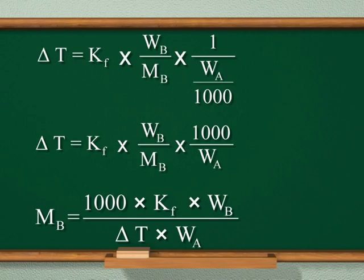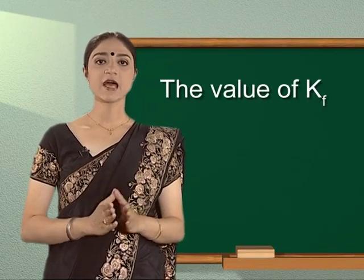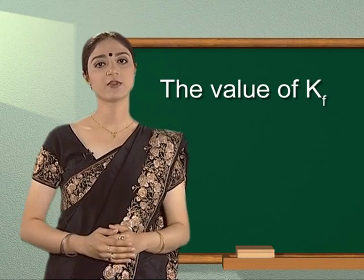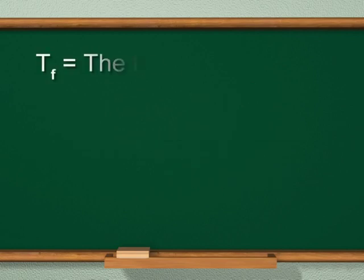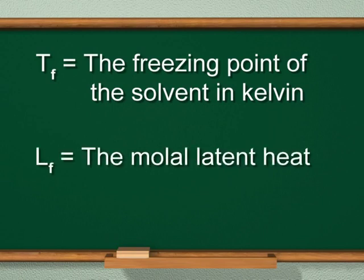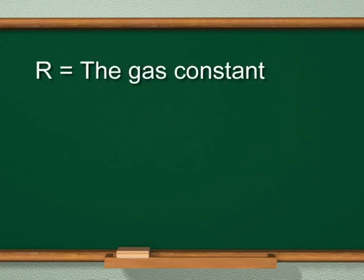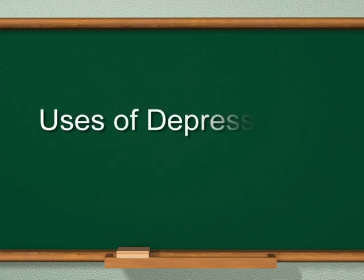With the help of the shown equation, the value of Kf can be calculated using: Kf equals R multiplied by Tf squared, divided by 1000 multiplied by Lf, where Tf is the freezing point of the solvent in Kelvin, Lf is the molar latent heat of fusion, R is the gas constant, and Kf is the molar depression constant with units of Kelvin per kilogram.